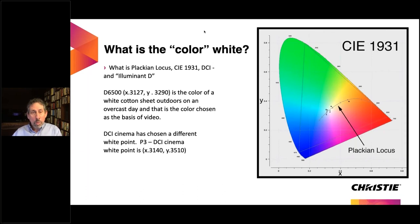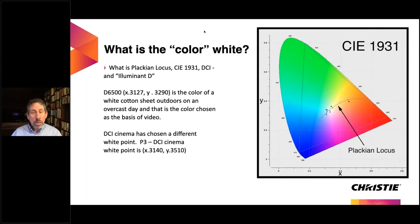We've defined white in a certain way for video; cinema has its own cinema white, which is slightly warmer. A white cotton sheet outdoors on an overcast day gives us D65, or D6500 — the standard color of white. Back when blacksmiths heated metal 'white hot,' our eyes perceived it as white, and that's on the Planckian curve. I put a meter on my TV and it reads about 11,000 Kelvin — very blue — but my brain sees it as white.